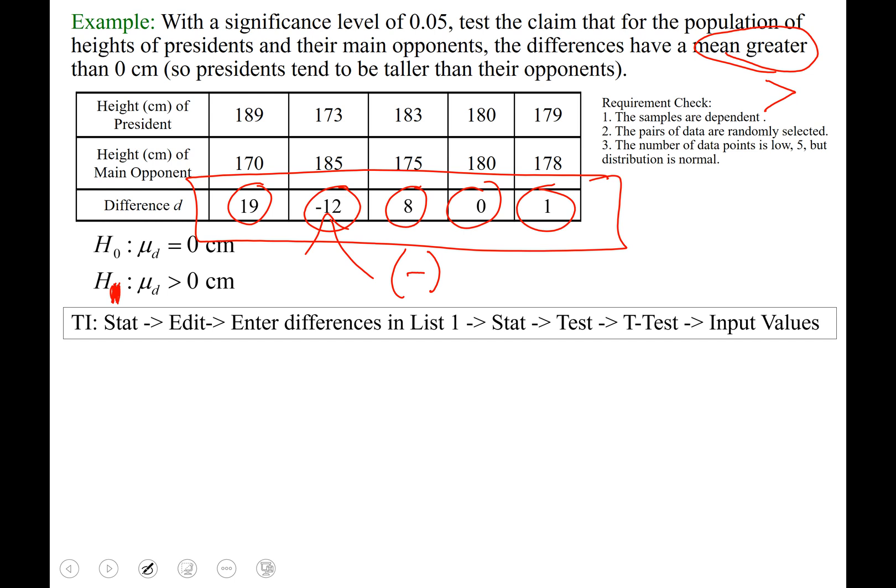Mu sub 0 is the next thing they want from us. And that is 0. So your inputs, mu sub 0 equals 0. Your next input, I put mine into list 1. So if you put yours in the list 2 for some reason, just hit second and the number 2.